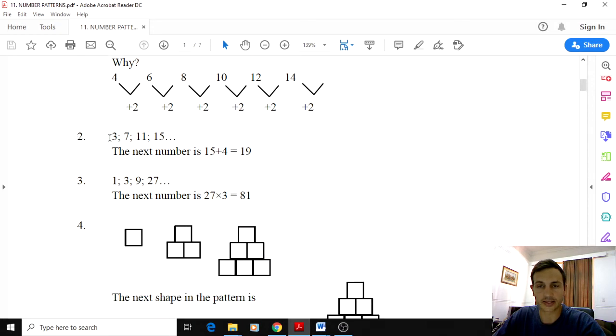Here we have another pattern. It goes from 3 to 7 to 11 to 15. So it's pretty clear that it's going up by 4 every time. So to get the next term after 15 you add 4, you'll get 19. And then after 19 you add 4 again and get 23.